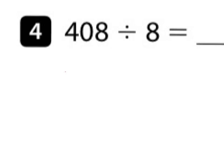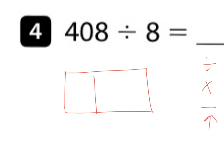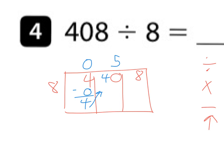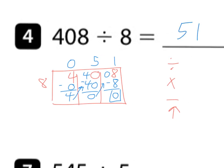Number four: 408 divided by 8. Divide, multiply, subtract, bring up — our four steps. 8 goes into 4 zero times, 0×8=0, subtract, bring your 4 up. 8 goes into 40 five times, 5×8=40, subtract, zero, bring up. 8 goes into 8 one time, 1×8=8, subtract — remainder zero. So 8 divides into 408 evenly 51 times. There are 8 groups of 51 to give 408.